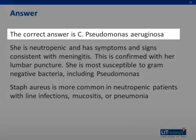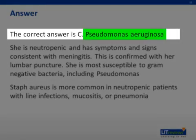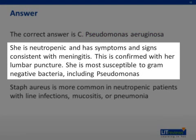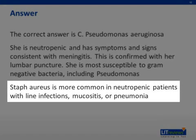The correct answer is C, Pseudomonas. She's neutropenic and has signs and symptoms consistent with meningitis, confirmed by the lumbar puncture, and she is most susceptible to gram-negative bacteria including Pseudomonas. One important thing to realize is that Staph aureus would be more common in these neutropenic patients if she had a line infection, mucositis, or other evidence of skin cellulitis.